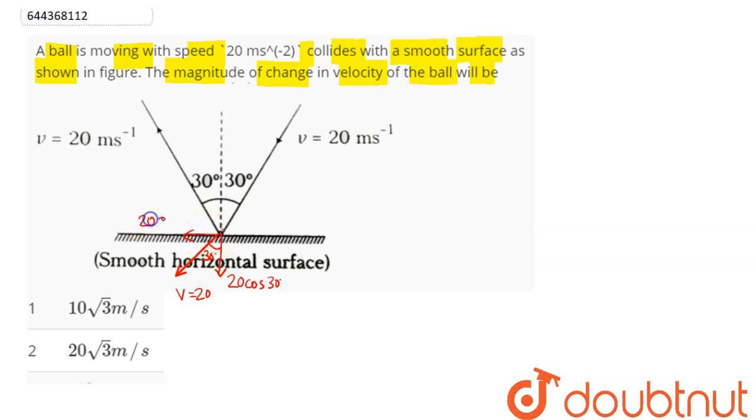Hence, the initial velocity vector vi can be written as minus 20 sin 30 i cap and minus 20 cos 30 j cap.